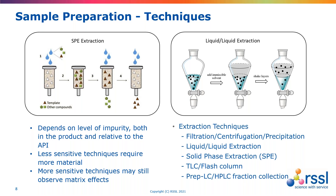In the case of SPE extraction, if your impurity has a high charge, we may be able to utilize anionic or cationic exchange columns that bind those particular impurities while the remaining compounds are eluted out, allowing us to increase and purify the amount of impurity. In the case of liquid-liquid extraction, we utilize potential differences in solubility — for example, an impurity might be far more soluble in an organic solvent rather than water. These techniques can be utilized in combination with each other depending on the compounds within a particular mixture.